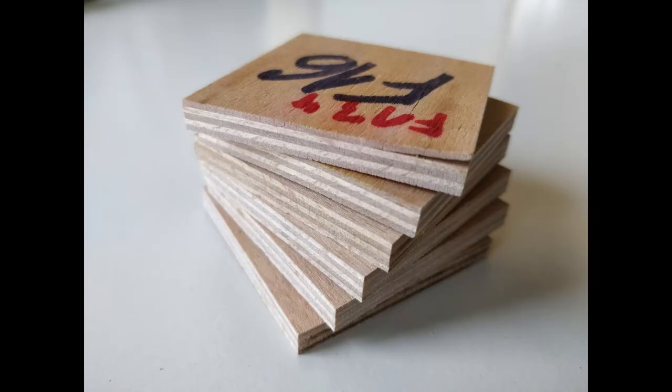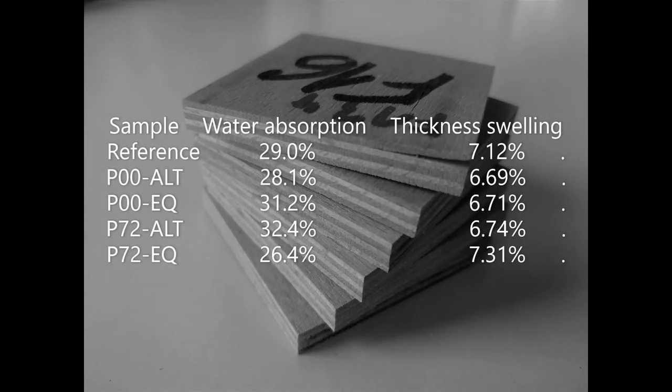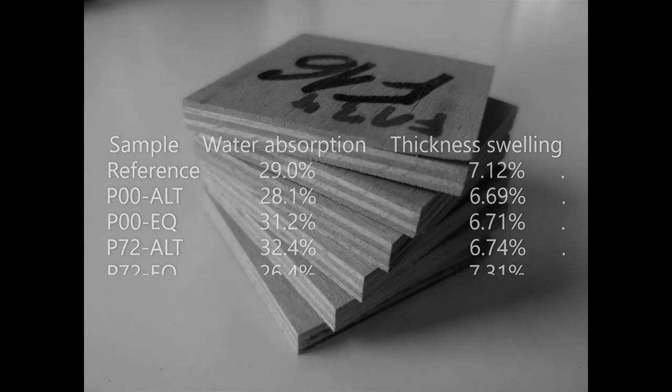The durability of the plywood was tested by 24 hours of soaking in water. Afterwards, the samples were dried for 16 hours at 103 degrees centigrade in the oven to stress the bond line. On the plasma treated samples, we find a slightly higher mass increase after 24 hours of water absorption. The remaining thickness swelling after an additional 16 hours of drying, however, is slightly lower on the plasma treated samples.